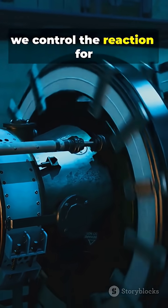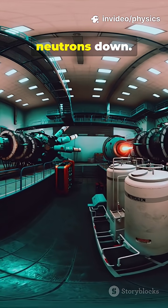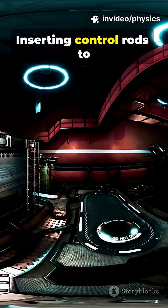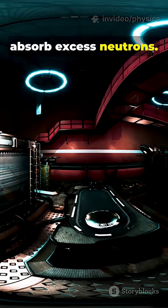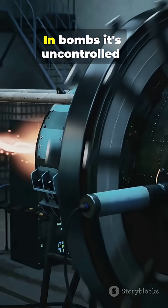In reactors, we control the reaction for steady power, using moderators to slow neutrons down, inserting control rods to absorb excess neutrons. That keeps the reaction steady and useful for electricity.